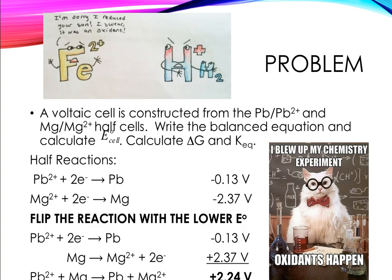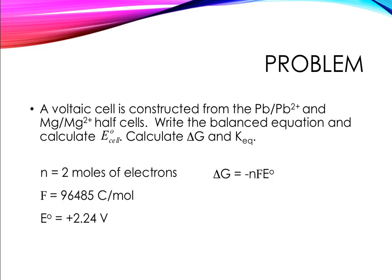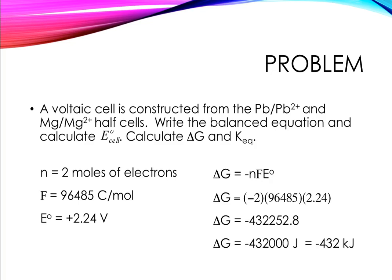So, lead²⁺ plus magnesium makes lead metal plus magnesium ion, and the voltage is 2.24 volts. There are two electrons being transferred and E cell is positive 2.24 volts. So we can now find delta G — we know N, we know E naught, and Faraday's constant. We just plug it all in and we get a very large negative number. Delta G is negative, which is what we expected because E cell was positive. Make sure that when you report your answer your units are consistent — you could report it in joules or convert it to kilojoules, but make sure your units and your value go together.